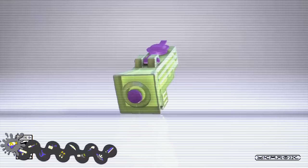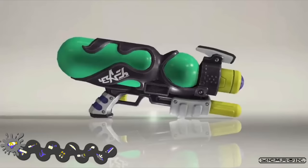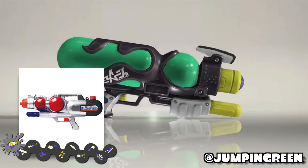The Splattershot Jr. is a cheaper or dollar store version of a water gun, even with a little plastic cap on top. The brand new Splattershot Nova is based off of a space themed water gun in Japan.